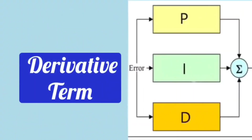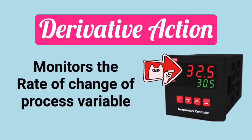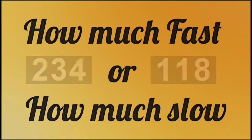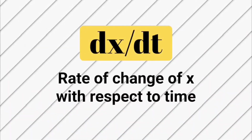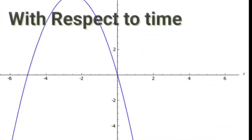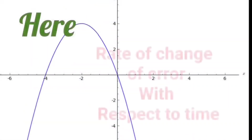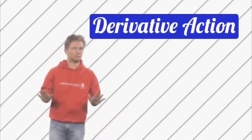Now let's understand D for derivative term. The derivative term monitors the rate at which the process variable is changing — how fast the change is happening or how slowly the change is happening. As we have studied in mathematics, dx over dt is the rate of change of x with respect to time. Here it is the rate of change of error with respect to time. That's why it is called derivative term or derivative action.